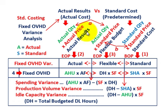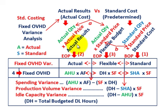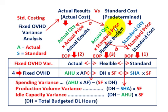Now we know our actual results and our standard amount. We can determine our flexible budgeted amount. That's just taking our actual quantity used based on actual results and multiplying it by the standard price established from our standard cost — actual quantity times standard price equals our flexible budgeted amount.